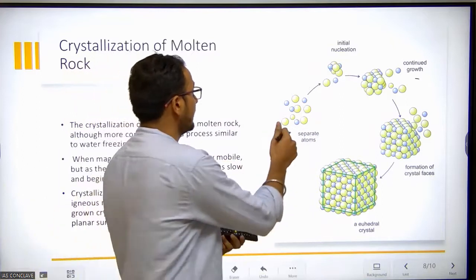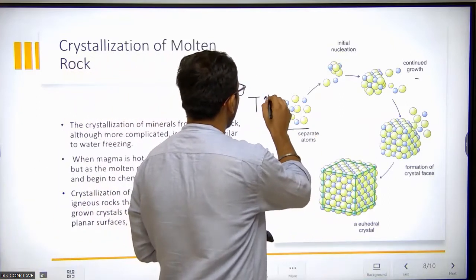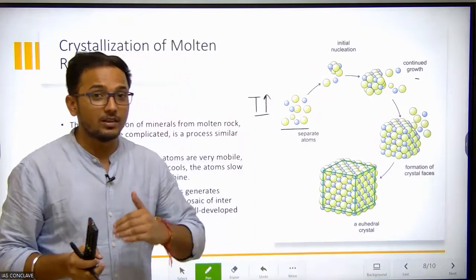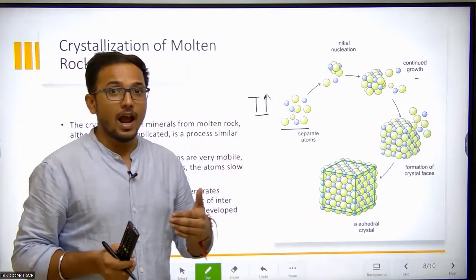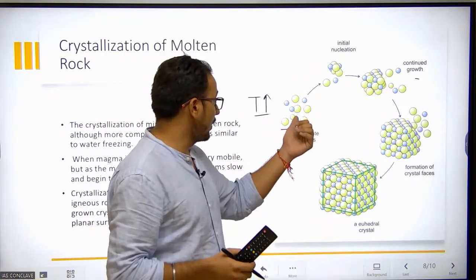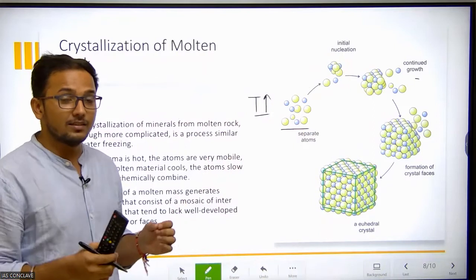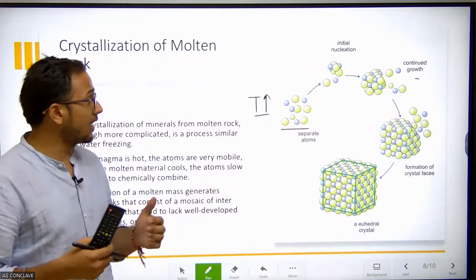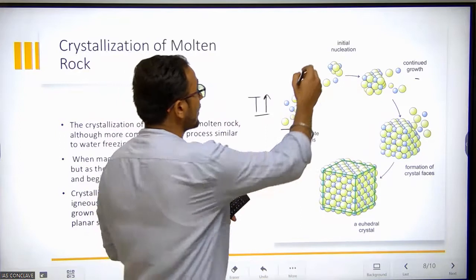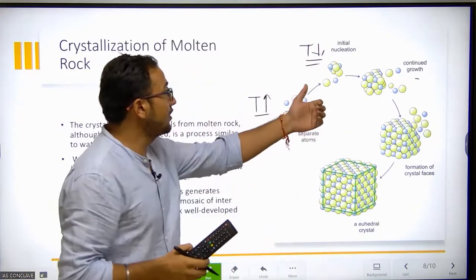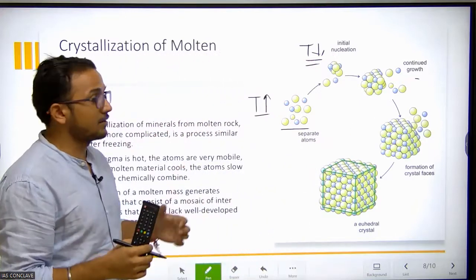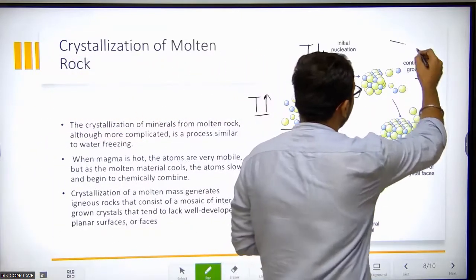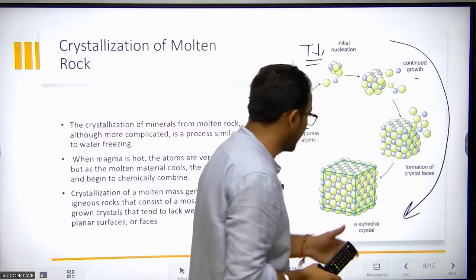You can notice when there is a high temperature of the molten materials like magma, when magma erupts there is a high temperature, but with time it starts cooling and solidifying. When there is high temperature, in the molten material there is movement of the ions, they are not settled down. But when the temperature starts going down, there is the formation of the initial nucleation. Now the ions or the atoms are starting settling down, and this process continues. This continued growth makes a final crystallized structure.